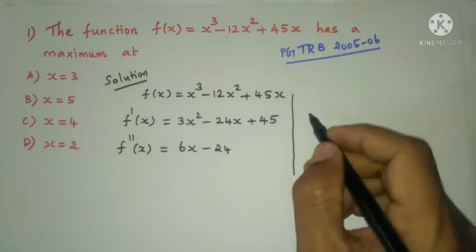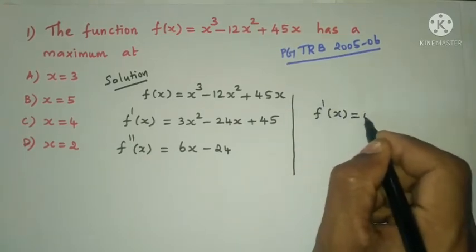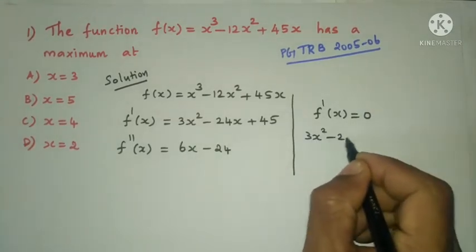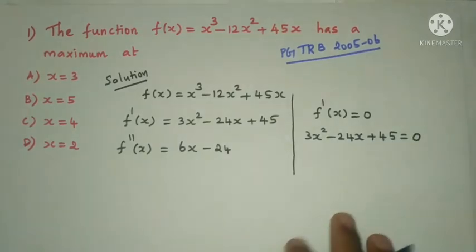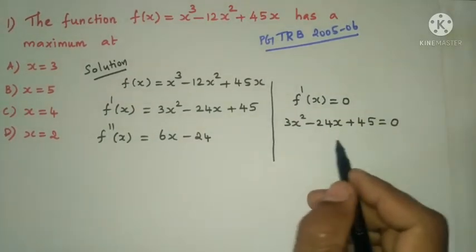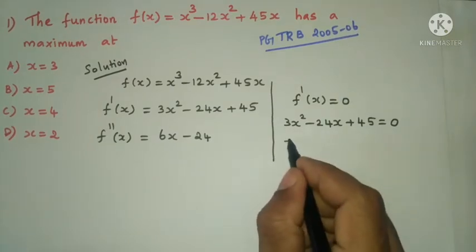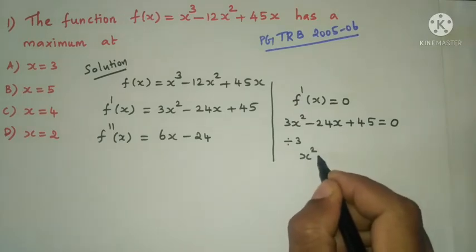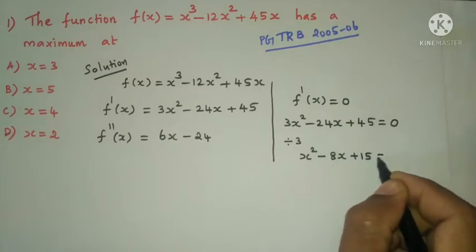Set f'(x) equal to 0: so 3x² minus 24x plus 45 equals 0. Dividing through, this becomes x² minus 8x plus 15 equals 0.